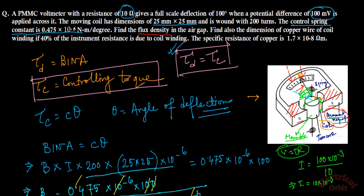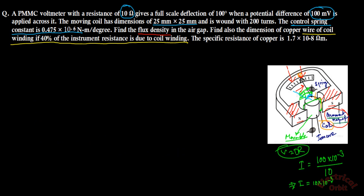The next part asks us to find the dimension of the copper wire of the coil winding, given that 40% of the instrument resistance is due to coil winding. The instrument resistance is 10 ohms, so the copper coil resistance is 40% of 10 ohms, which equals 4 ohms.